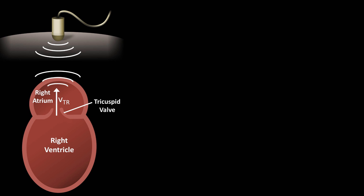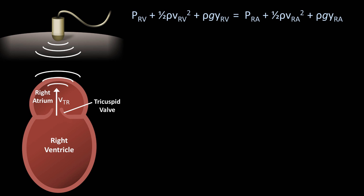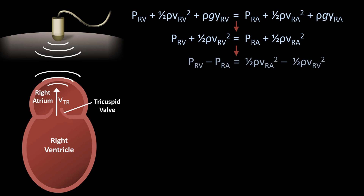Let's write out Bernoulli, with a point in the center of the right ventricle (RV) as point 1, and a point just adjacent to the valve within the right atrium (RA) as point 2. The difference in vertical height between these two chambers relative to the other pressures involved is trivial, so the ρgy terms can be ignored. Since point RA is adjacent to the tricuspid valve and point RV is some distance away, the velocity at RA is much greater than velocity at RV, even more so when squared. So the term ½ρV_RV² can be ignored to achieve an approximation.